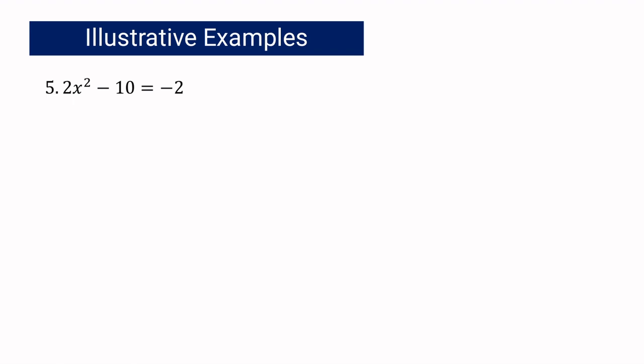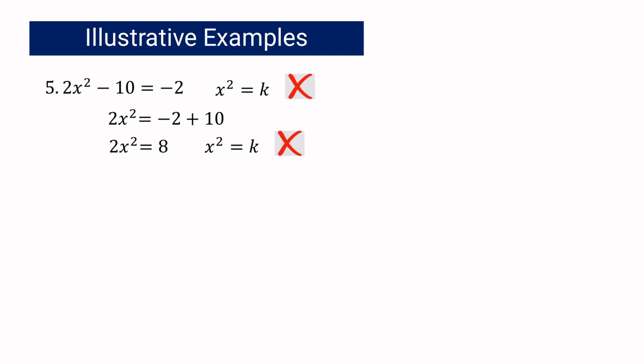Let us have example number 5: 2x squared minus 10 equals negative 2. Is it in x squared equals k? No, because we have two constant terms. We move them to the right side and simplify: 2x squared equals negative 2 plus 10, which becomes 2x squared equals 8. It is still not in the correct form because the numerical coefficient of the quadratic term should be equal to 1.